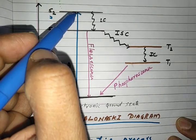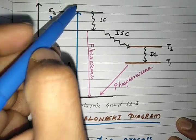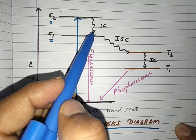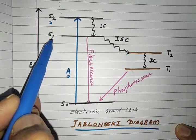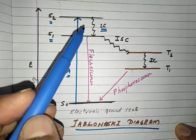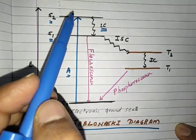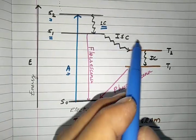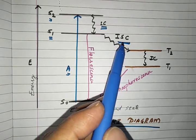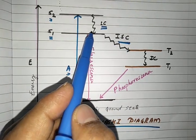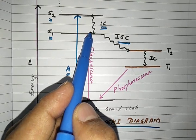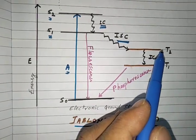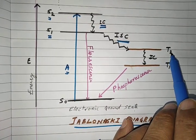If the electron goes to a higher energy level it is very unstable, so the molecule tries to come down to the next lower energy level. This coming down to a lower energy level while remaining in the singlet state is called internal conversion. Another important process happening here is called inter-system crossing. In inter-system crossing, the molecule moves from the singlet state to another lower-energy state.